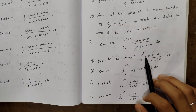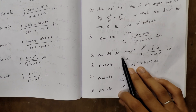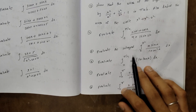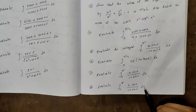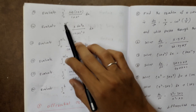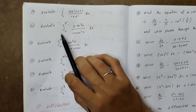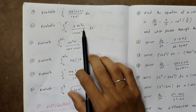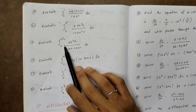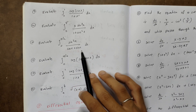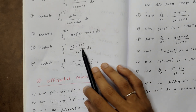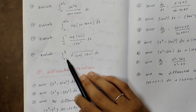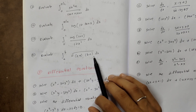Evaluate ∫₀^(π/4) (sinx+cosx)/(9+16sin2x) dx. Evaluate ∫₀^π x·sinx/(1+cos²x) dx. Evaluate ∫₀^(π/4) log(1+tanx) dx. Evaluate ∫₀^π x·sinx/(1+sinx) dx. Evaluate ∫₀^(π/2) sin²x/(cosx+sinx) dx. Evaluate ∫₀^1 log(1+x)/(1+x²) dx. Evaluate ∫ₐ^b √((x-a)(b-x)) dx.